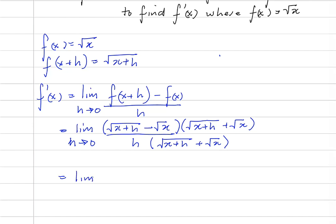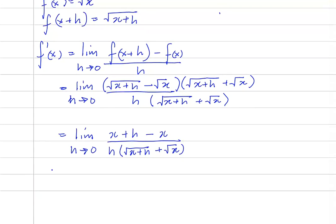So this is the limit as h approaches 0. Over the top, we're going to have x plus h — root of x plus h times root of x plus h is x plus h — minus root x times root x, which is x. And this is over h times the root of x plus h plus the root of x. This is going to be equal to the limit of h over h times the root of x plus h plus root x, as h approaches 0. Well, h here cancels h here.